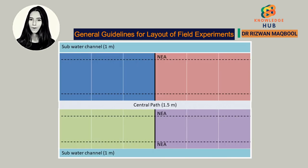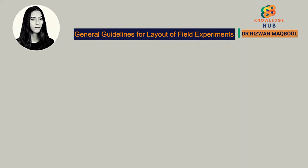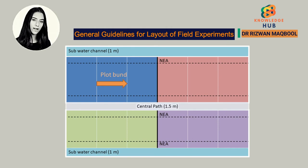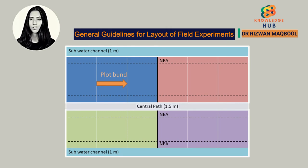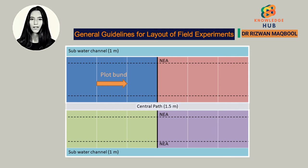4. Non-experimental area should be left along the water channels and both sides of the central path. 5. In case of irrigation and fertilizer experiments, the plot bunds should be sufficiently strong to check the overflow of water or effect of fertilizer from one plot to other. The width of the plot bund varies from 0.45 to 0.6 meter depending upon the soil conditions and type of treatments.